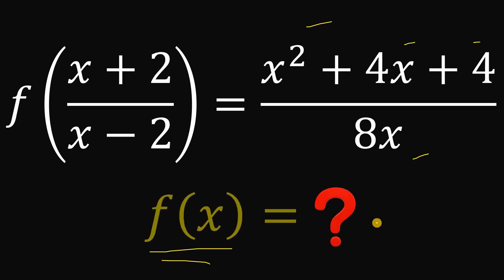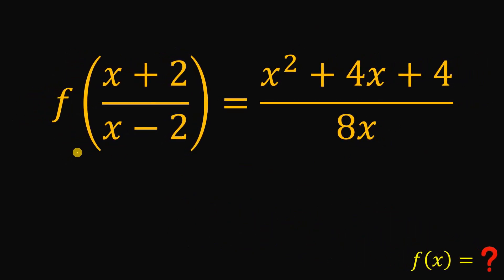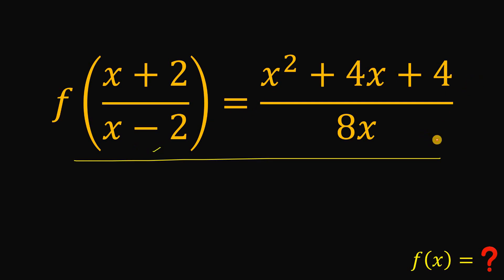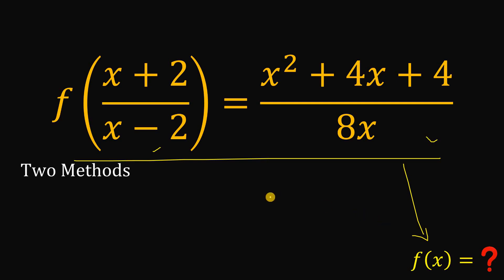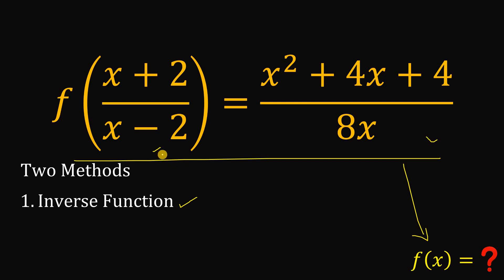Now suppose you paused this video — let's see if you got the correct answer. So given this functional equation, f of (x+2)/(x-2) equals (x²+4x+4)/(8x), our goal is to find the value of just f of x. In this video, I will answer this question in two different ways. The first one is the usual way, which is using the inverse function.